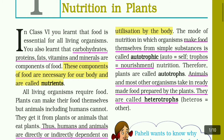The word 'auto' means self, and 'trophs' means nourishment or feeding. Therefore, plants are called autotrophs. Autotrophic nutrition applies to plants because plants prepare their own food.